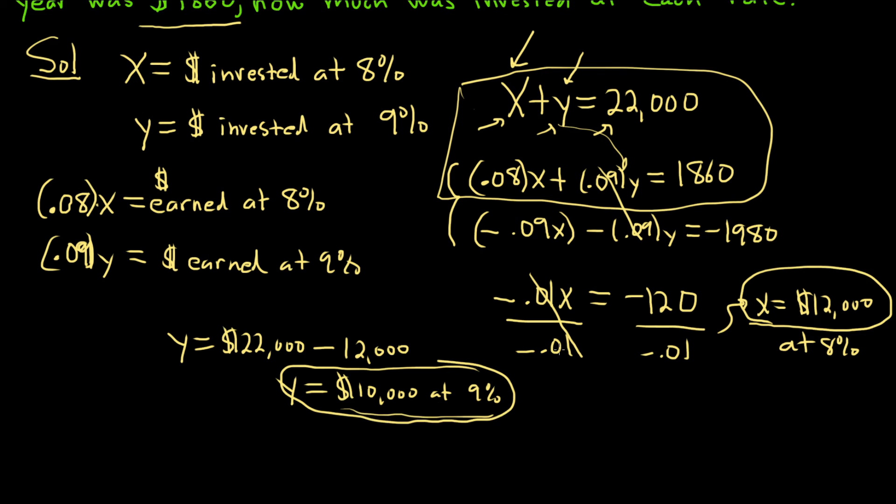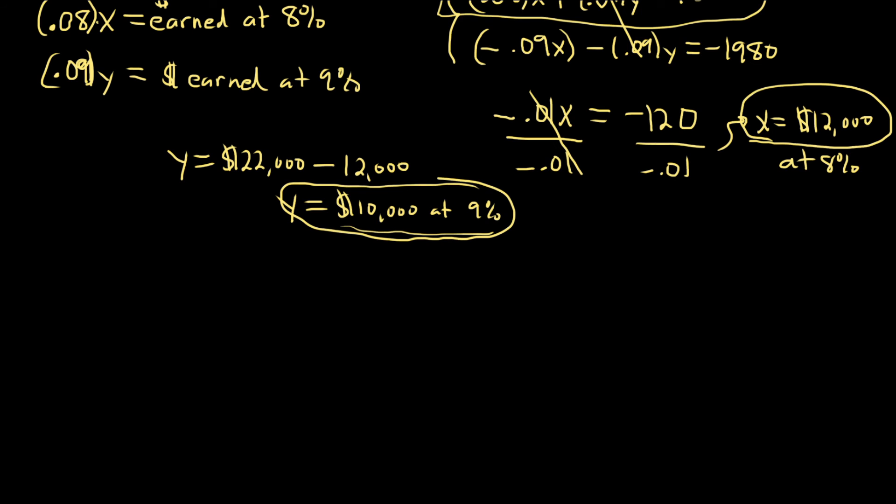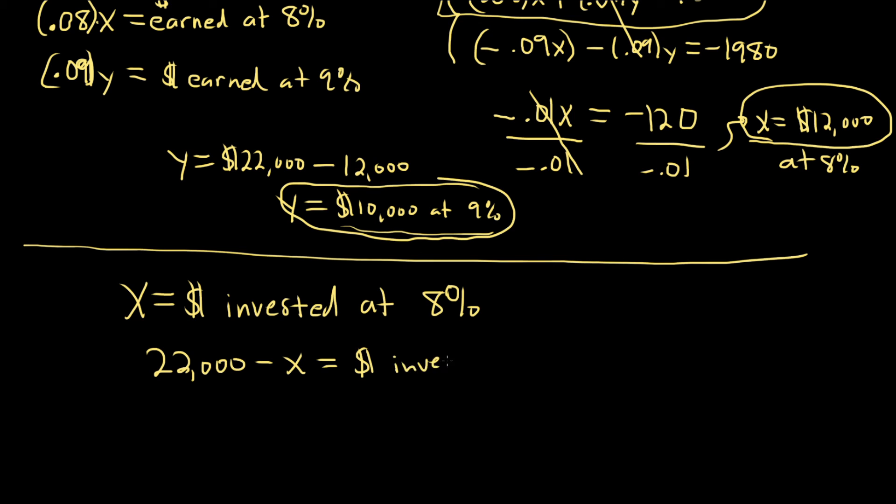Another way to do it is the way that is typically done in homework problems and solutions to the homework. They'll say, okay, X is the money invested at 8%. I don't like doing it this way. I think it's too hard. And then, so that means that $22,000 minus X is the money invested at 9%. If you invest X dollars at 8% and you start with $22,000, that means you have $22,000 minus X dollars left to invest at 9%.